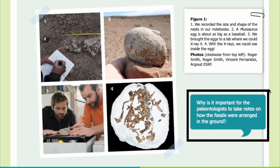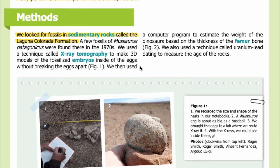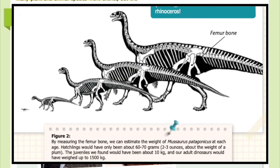Looking at the photos — why is it important for the paleontologist to take notes on how the fossils were arranged in the ground? We then used a computer program to estimate the weight of the dinosaurs based on the thickness of the femur bone. We also used a technique called uranium-lead dating to measure the age of the rocks. Figure 2: by measuring the femur bone, we can estimate the weight of Mussaurus patagonicus at each age. Hatchlings would have only been about 60 to 70 grams — two to three ounces — about the weight of a plum. The juveniles we found would have been about 10 kilograms.